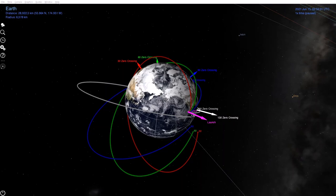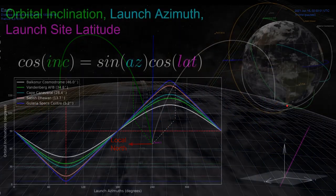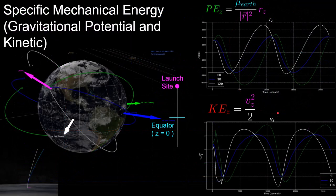In this video, we will be going over the relationship between launch azimuth, orbital inclination, and launch site latitude for rocket trajectories. We'll start by defining the launch azimuth angle and its constraints based on local geography with two-dimensional and three-dimensional visualizations. Then we'll go over the equation of the relationship between inclination, azimuth, and latitude for different launch sites around the world. And finally, we will go into the intuition behind why a rocket cannot directly launch into an orbital inclination that is lower than its launch site latitude with two explanations.